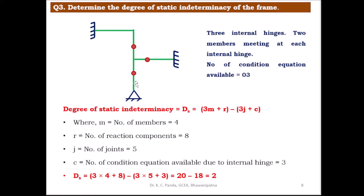Counting the members: m = 4. The reaction components: 3 + 3 + 2 = 8, so r = 8. The number of joints j = 5, and c = 3. Therefore, ds = 3(4) + 8 − 3(5) + 3 = 12 + 8 − 15 + 3 = 20 − 18 = 2. The degree of static indeterminacy of this frame is 2.